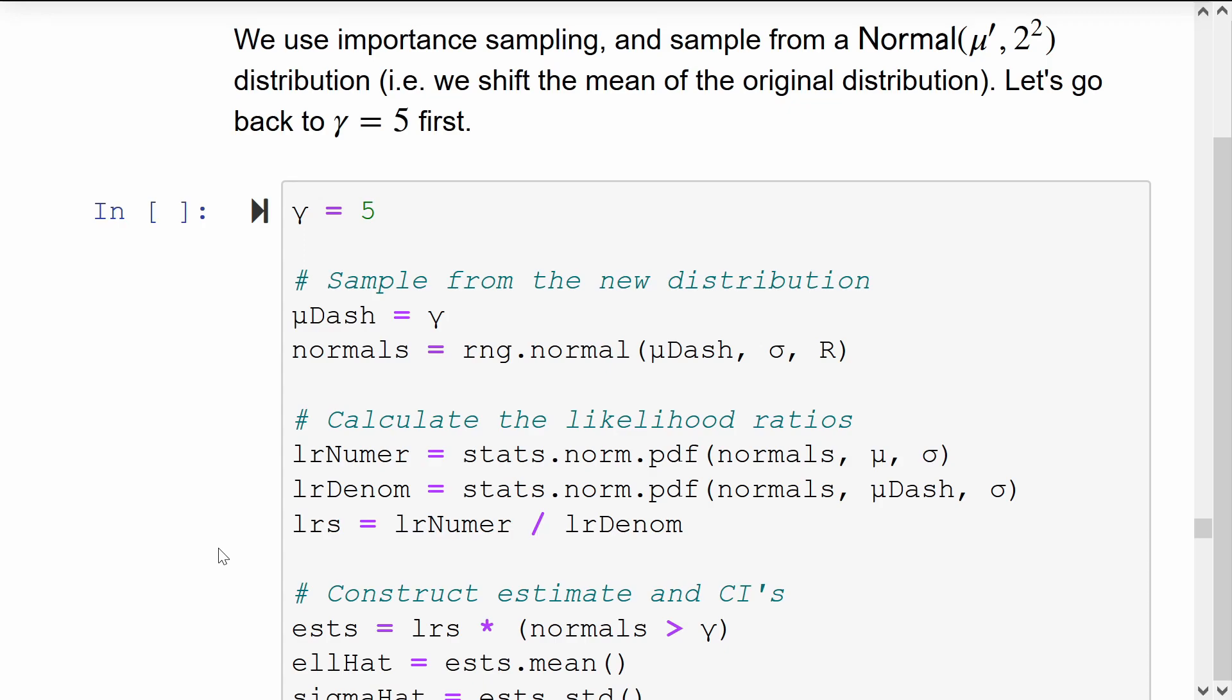We can choose any number here. Because we're no longer simulating from the original distribution, we have to compensate for that. That is where the likelihood ratio comes in. We calculate the PDF of the original distribution on our observed normals, and we calculate the PDF of the proposal distribution on our observed normals. Their ratio is the likelihood ratio.